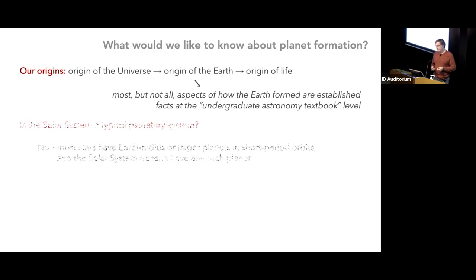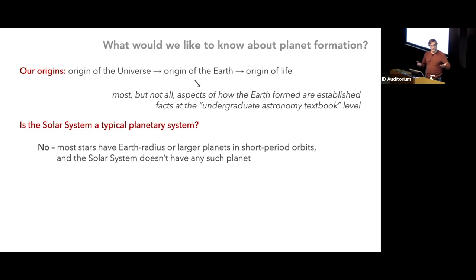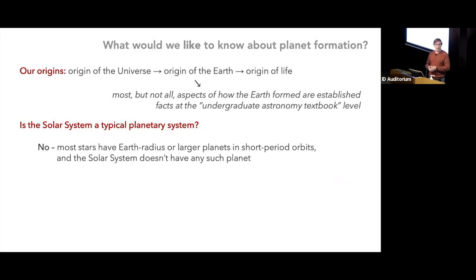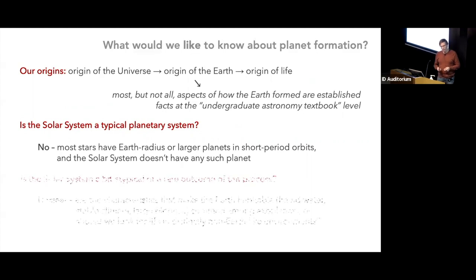Coming to a more modern perspective with the discovery of extrasolar planets — the first of those was roughly 25 years ago — one immediate question raised by observations of extrasolar planetary systems was: is the solar system a typical planetary system? The first exoplanets found looked completely different from the solar system, so after 25 years of observations we know the solar system is not typical. If we look at a random star, those stars have pretty massive planets — Earth mass or bigger — in close-in orbits well inside where Mercury is.